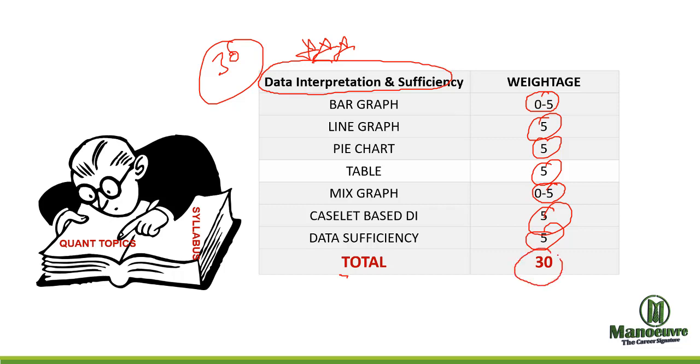Roughly 30 questions you can expect from this area and this section tests more of your calculation speed and again it is nothing but the part of percentage and ratio proportion. DI is more about calculating and visualizing the graph.